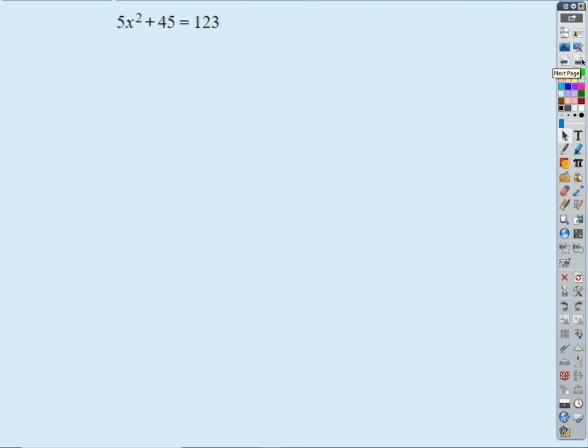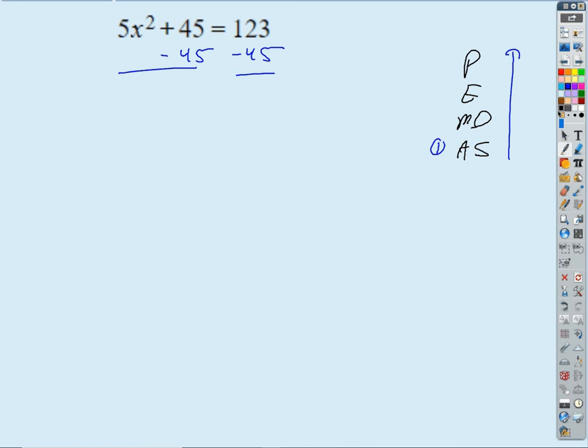All right. A couple more real quick. So what about this guy? What am I going to do here? Subtract 45 first. Everybody agree? Okay? So we're going to get, if I do that, just working our way through PEMDAS. So step one, I get 5x squared equals, let's say it can give me 78. Divide by 5. Good. So next step would be, divide each side by 5. And that's going to give me x squared equals 78 over 5. Now what? What's next? Square root.